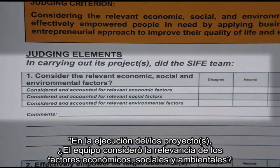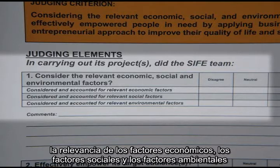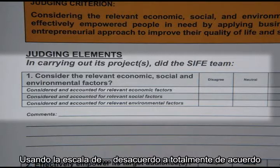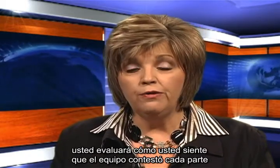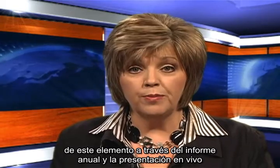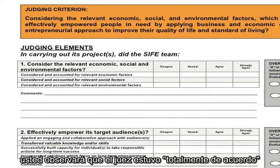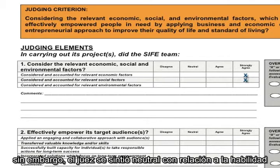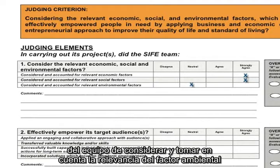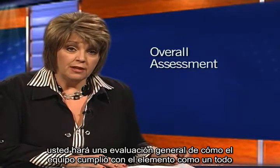For example, for the first element — did the site team consider the relevant economic, social, and environmental factors — there are three aspects for your evaluation: relevant economic factors, social factors, and environmental factors. Using a scale of disagree to strongly agree, you will evaluate how the team answered each part through their annual report and/or live presentation. In the example provided for team ABC, the judge strongly agreed that they considered economic and social factors, but felt neutral about the team's consideration of environmental factors.